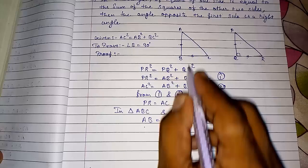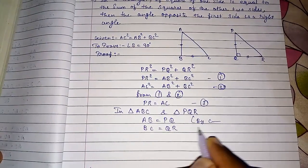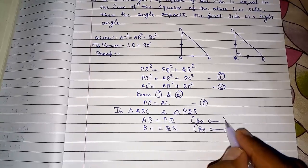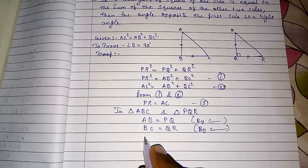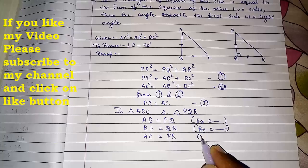Then BC = QR, that also by construction. And then third, we have proved by result number three that AC = PR by three.